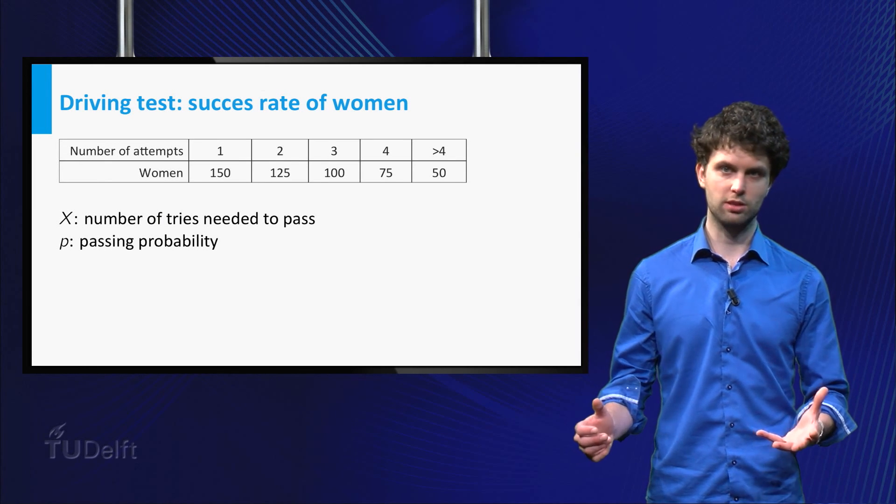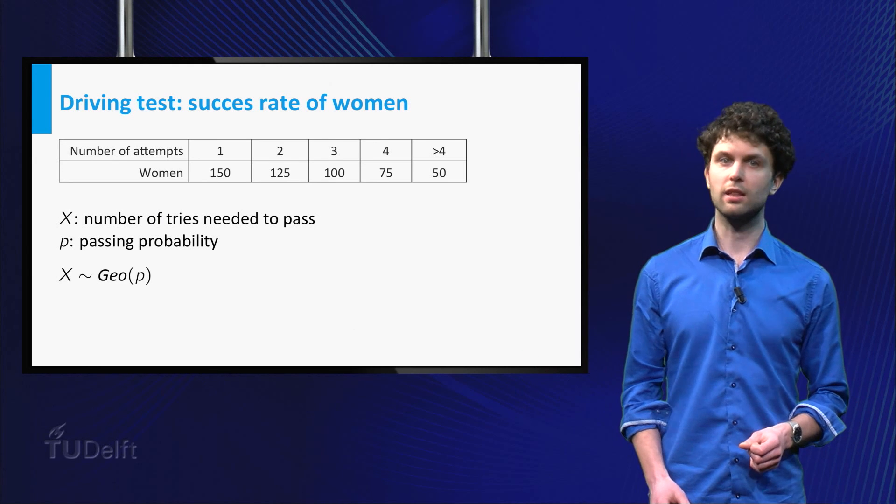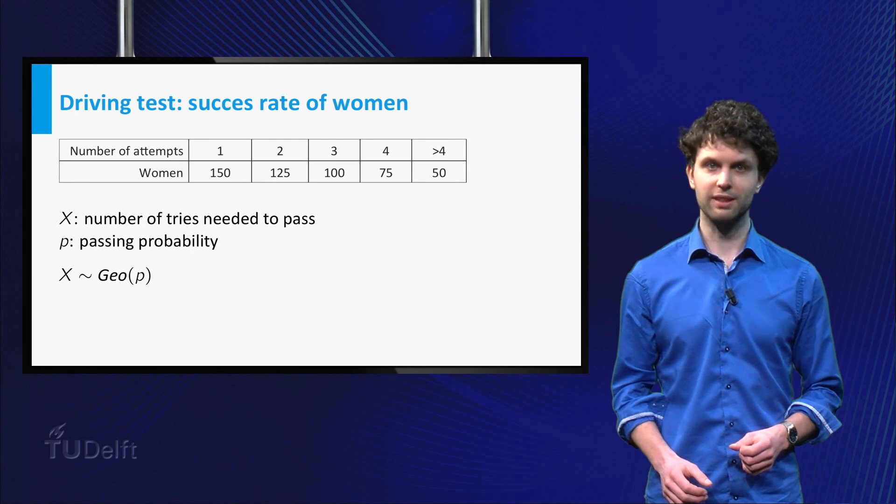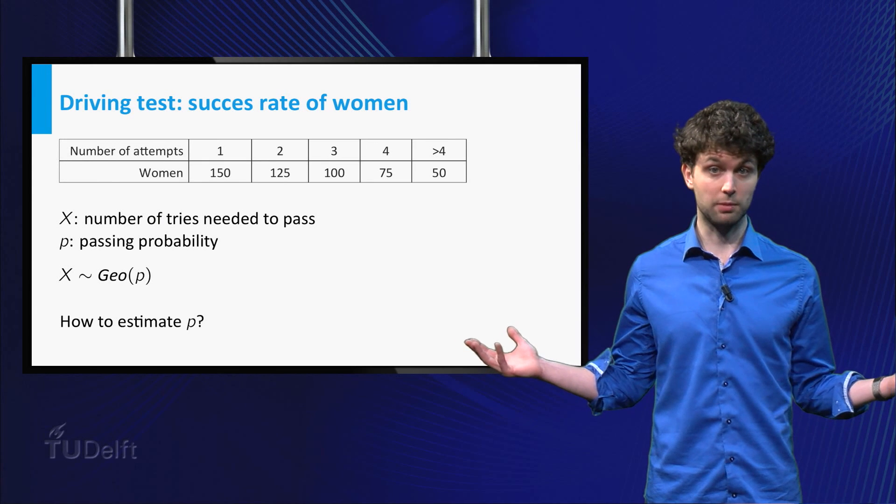Also, this probability is assumed to be the same for all women. We could argue about these assumptions, but for the moment, let's work with them. The stochastic model we obtain with these assumptions is that X has a geometric distribution with unknown parameter P. Now, what would be a good estimate for P?